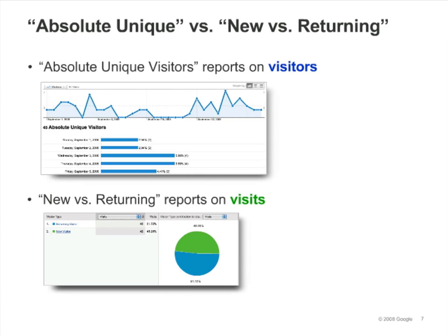Remember, a visitor is uniquely identified by a Google Analytics visitor cookie. The new versus returning report classifies each visit as coming from either a new visitor or a returning visitor. So, when someone visits your site for the first time, the visit is categorized as a visit from a new visitor. If the person has browsed your website before, the visit is categorized as a visit from a returning visitor.